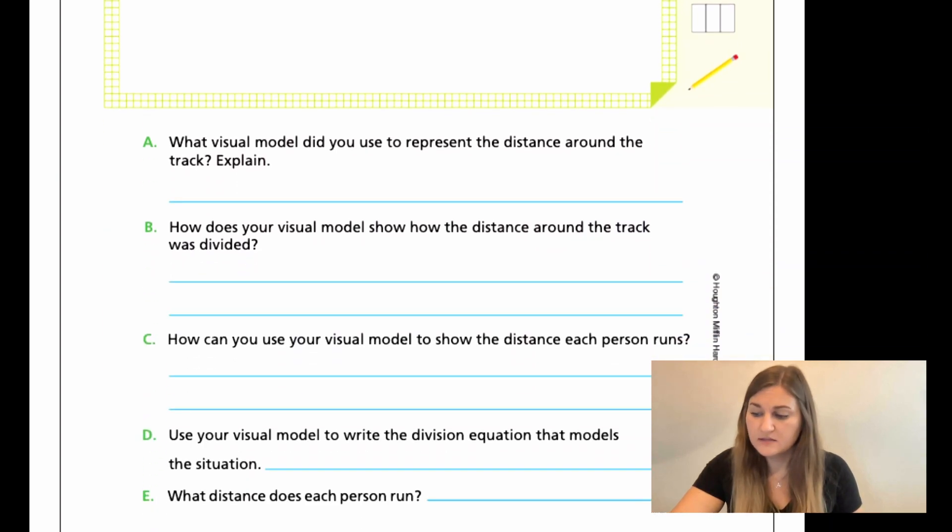So what we want to do is we want to be able to draw that figure in the green box. Then we want to come down and answer the rest of the problem. So for A, it says, what visual model did you use to represent the distance around the track? So really just describe to me what you did in your picture in words. B, how does your visual model show the distance around the track and how it was divided? So describe to me how you did. I made this be worth the columns. This was my rows and this was the total answer that I got. That's what that question is looking for. C, how can you use your visual model to show the distance each person runs? So we want to look at just that one tiny square. What does that one tiny square show in the problem? D, use your visual model to write a division equation that models the situation. This is where we're really looking for. We were able to do it in pictures, but what does the standard algorithm division problem look like with our fraction? And then E, what was the distance? What was the answer that you found? So go ahead and try these couple of questions and I'll have you hit pause here.